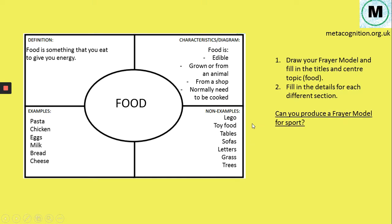What I'd like you to do now is produce a Frayer Model for 'sport.' Draw out your template, put 'sport' in the middle, then go around and fill in as many details as you can. Then come back, have a look at my example, see how good yours is, and see if you can add any more details.